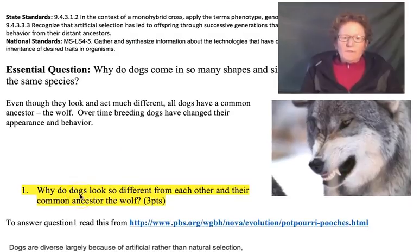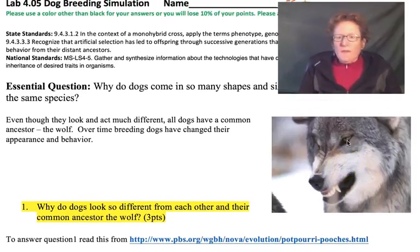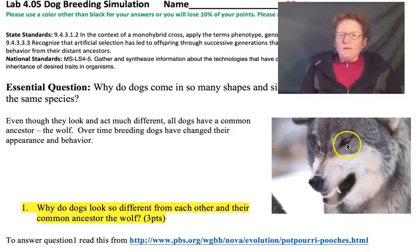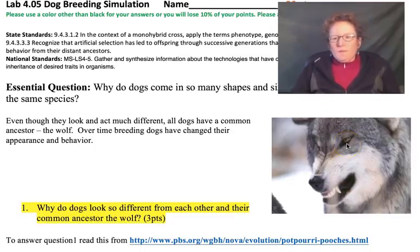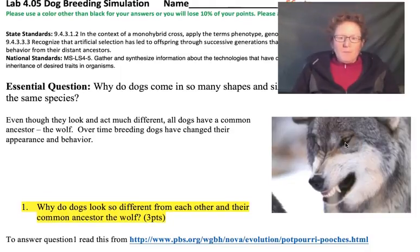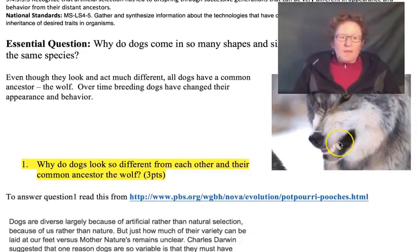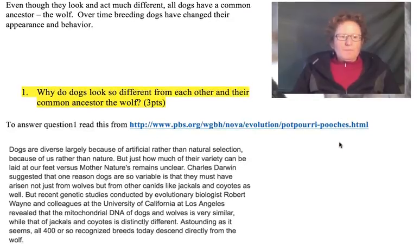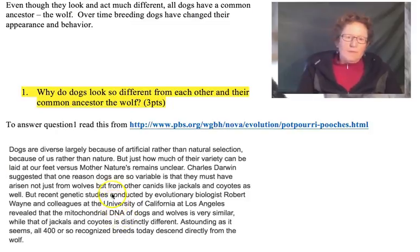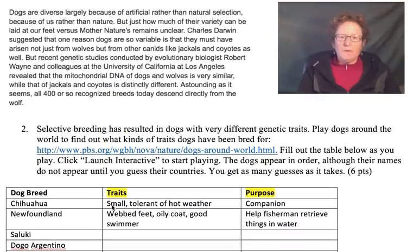Dogs look very different from each other and their common ancestor, the wolf. If you have a dog at home, it probably isn't as snarly and unfriendly as a wolf might be. Wolves generally won't bother humans unless you bother them. But our dogs are very different than the animals they evolved from. You can find out more by reading the paragraph, which you'll need to answer question one — you can do that on your own.